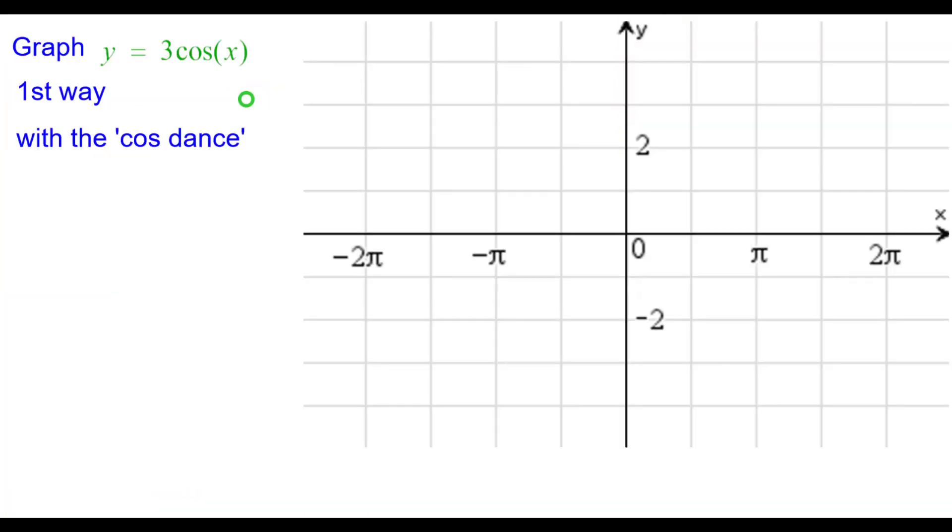Graph y equals 3 times the cosine of x. The first way is with what we call the cosine dance. Recall the graph of what the cosine looks like and it has five key points of interest which we will circle.